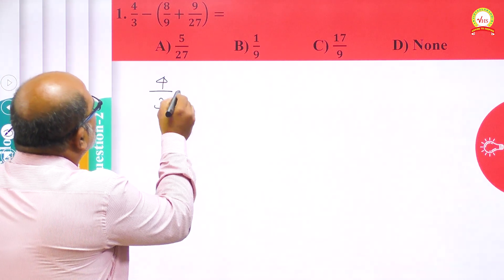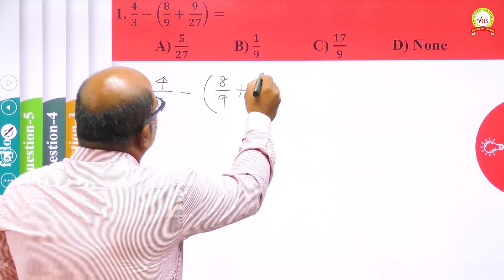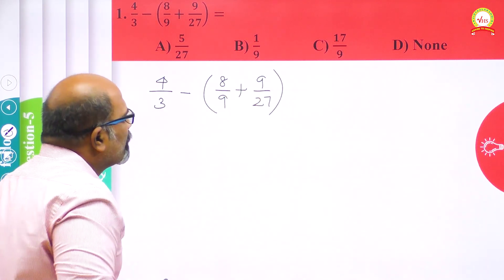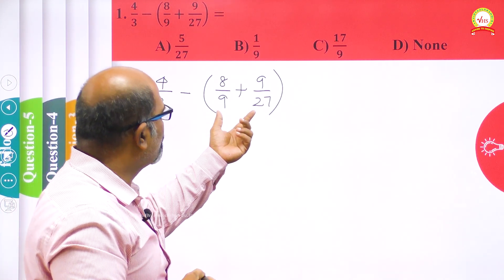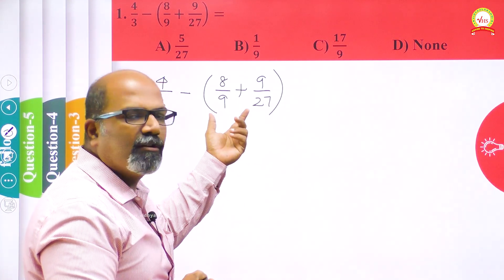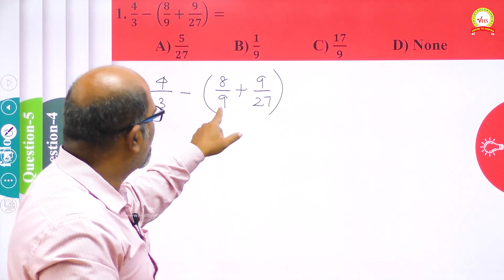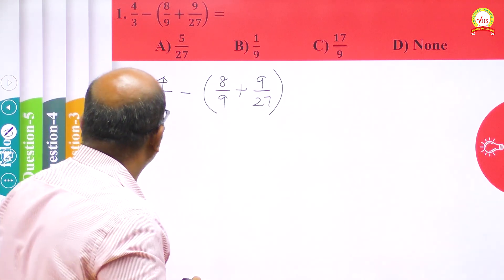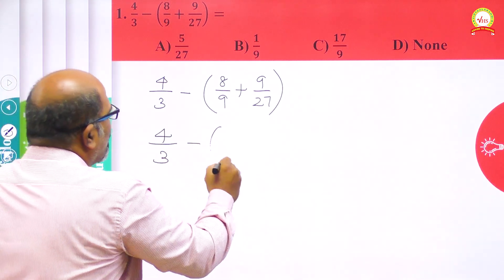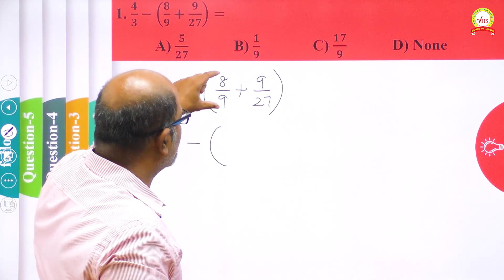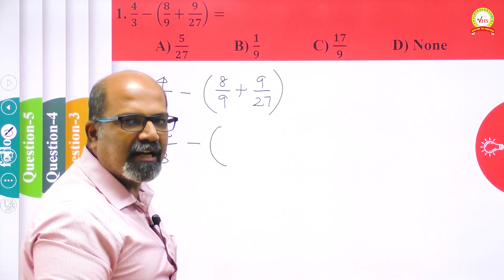We take the question: 4/3 minus of (8/9 plus 9/27). As we already studied, to simplify rational expressions in addition or subtraction, we have to make the denominators the same. Here we are having 9 and 27, so the first thing I want to do is keep 4/3 and convert 8/9 into an equivalent fraction.